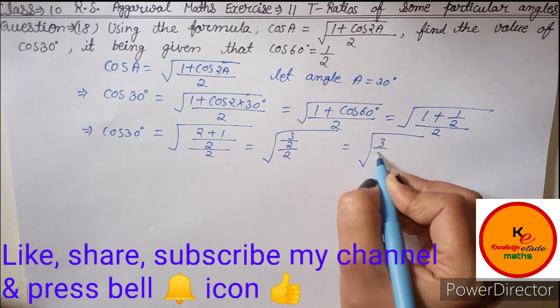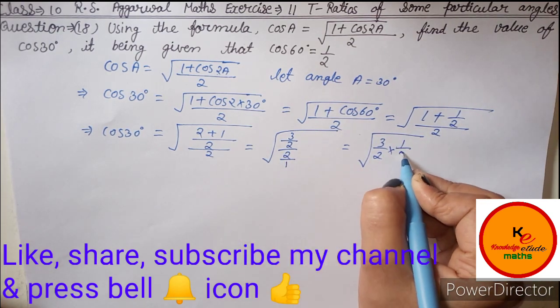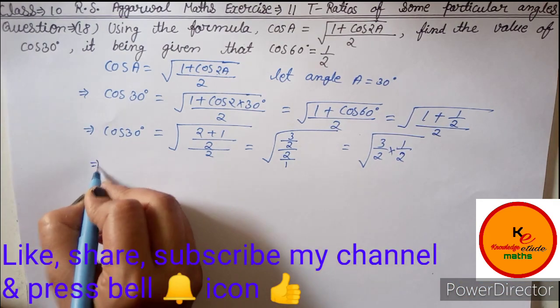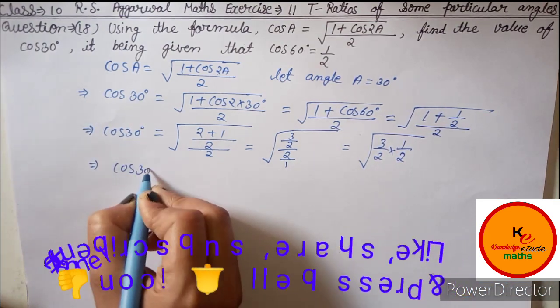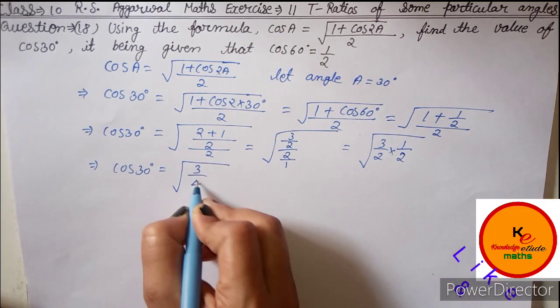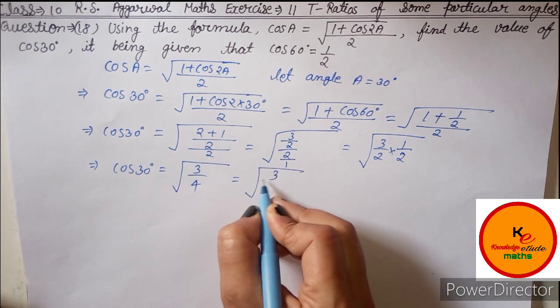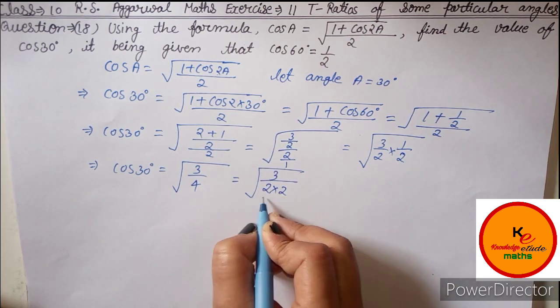Then we solve it: under root of, this is 3 by 2, multiply it and divide by 1, so here it will be 1 by 2. Then we solve it: cos 30 degree is equal to under root of 3 by 4.